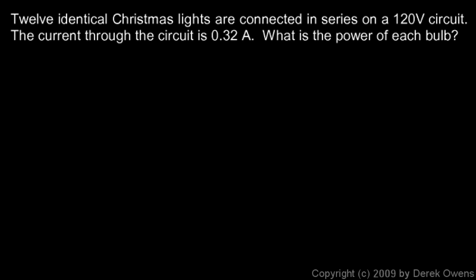In this case we're told that 12 identical Christmas lights are connected in series on a 120 volt circuit. So there's 12 of them in this problem, and it's 120 volts which is a typical household circuit. The current through the circuit is 0.32 amps and we're trying to find the power in each bulb. I'll solve this a couple of different ways.